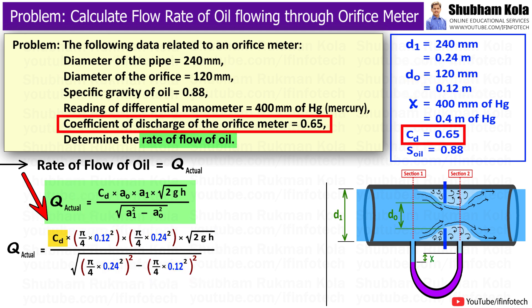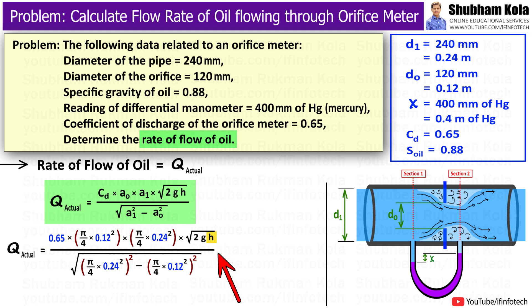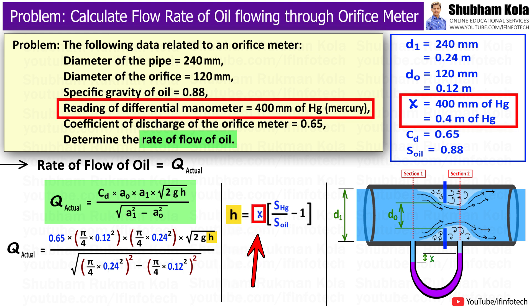In this formula, the value of coefficient of discharge, i.e. Cd, has already been given in the problem as 0.65, and also we have to calculate h, which is the difference in pressure head that we can calculate by using the x value.